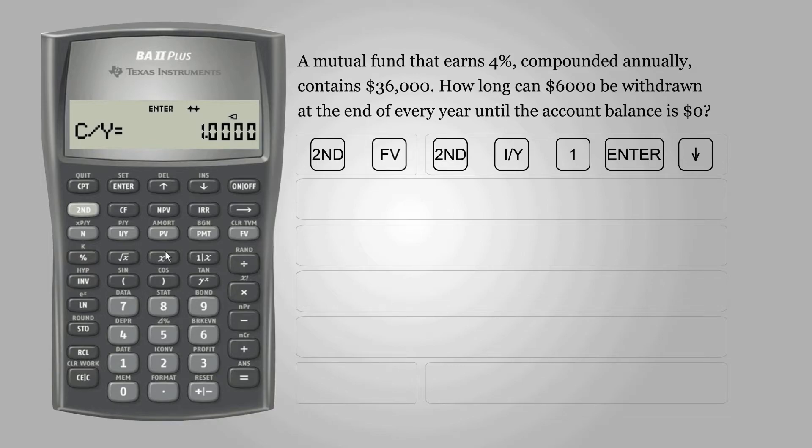Press C and C again to exit. Enter 4 and press IY for interest rate.